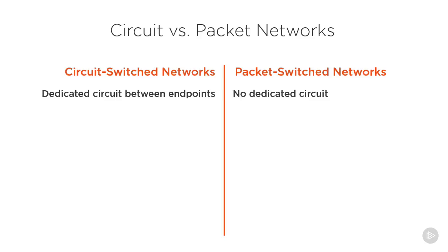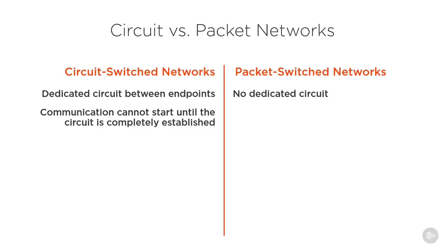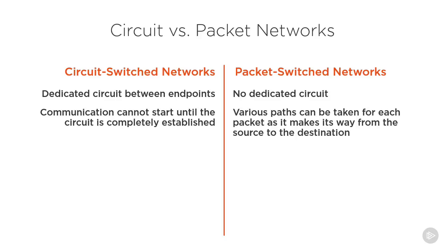On a circuit switch network, traffic cannot begin to flow until the circuit has been completely established, while a packet switch network allows for various paths to be taken by each packet as they make their way from the source to the destination.